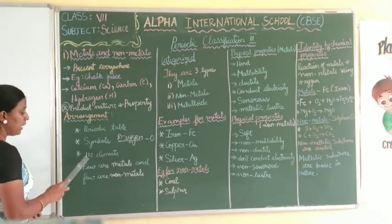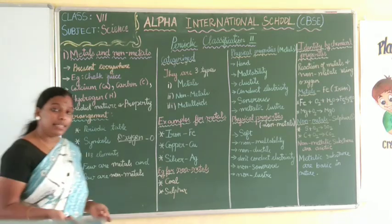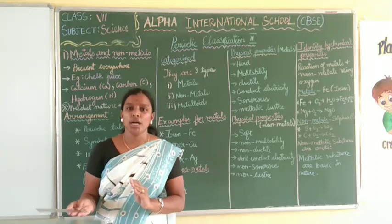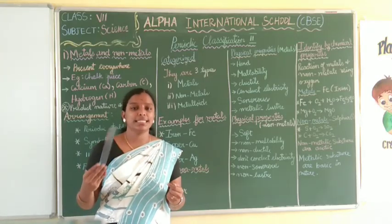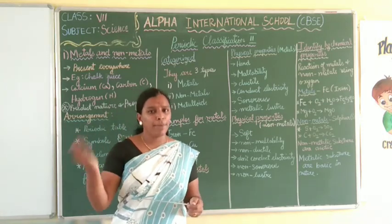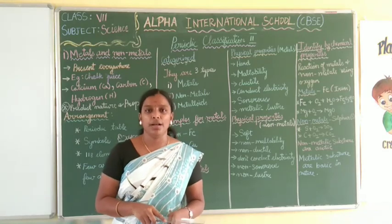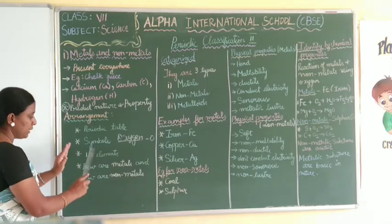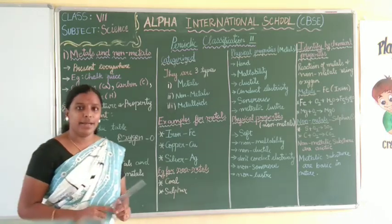There are 118 elements present here. Among these 118 elements, some are metal elements and some are non-metal elements. For example, iron is a metal element, and non-metals are also present in the periodic table. They are mixed together and present as 118 elements.